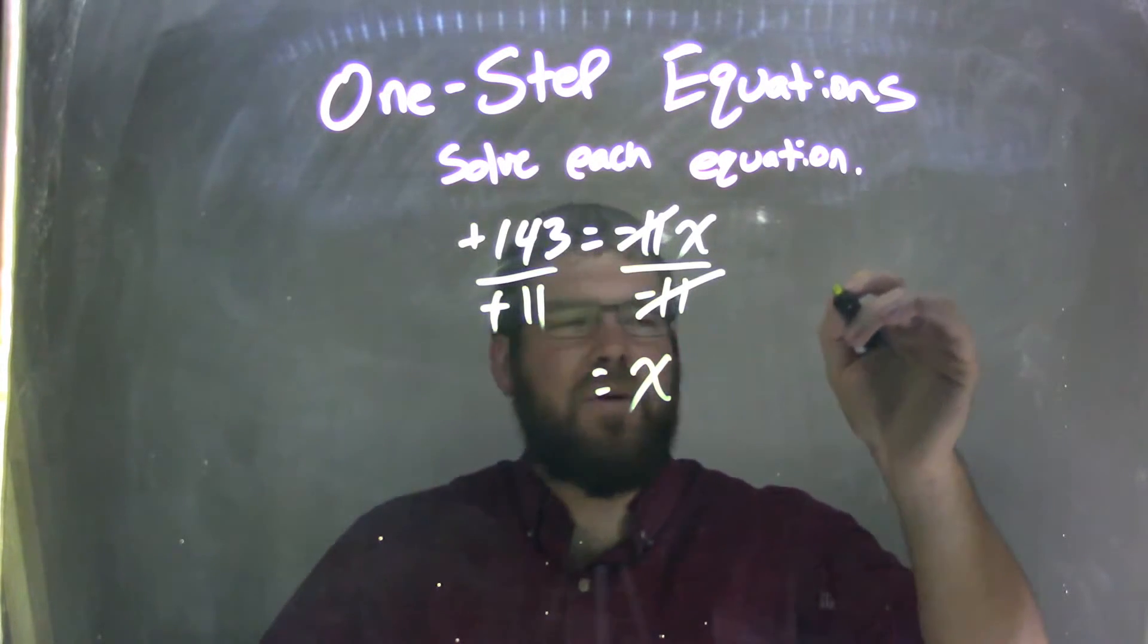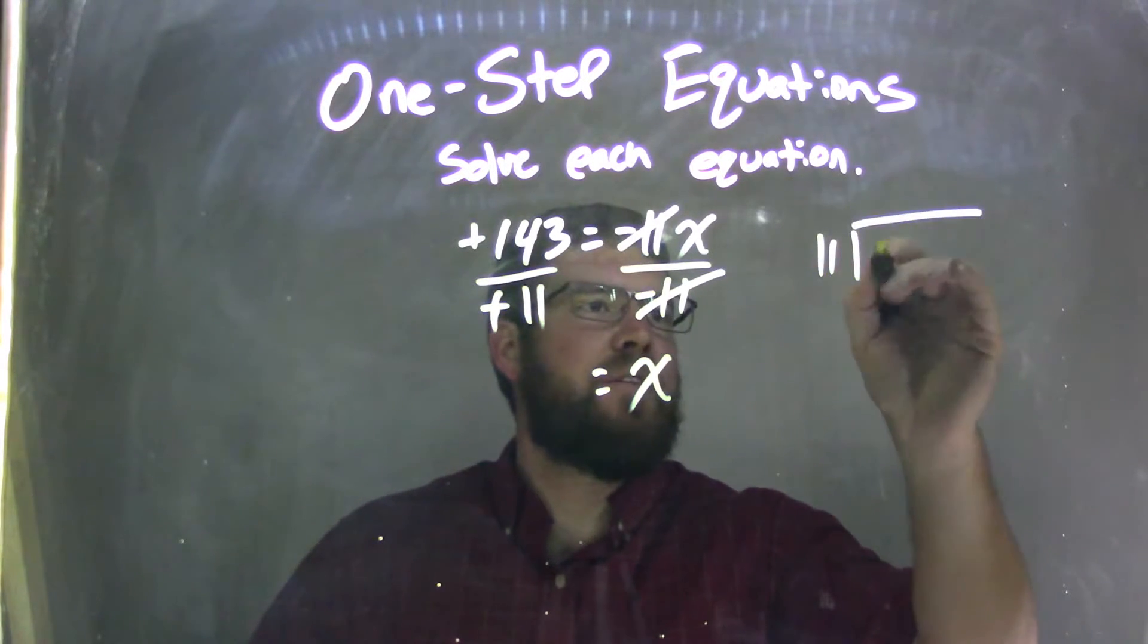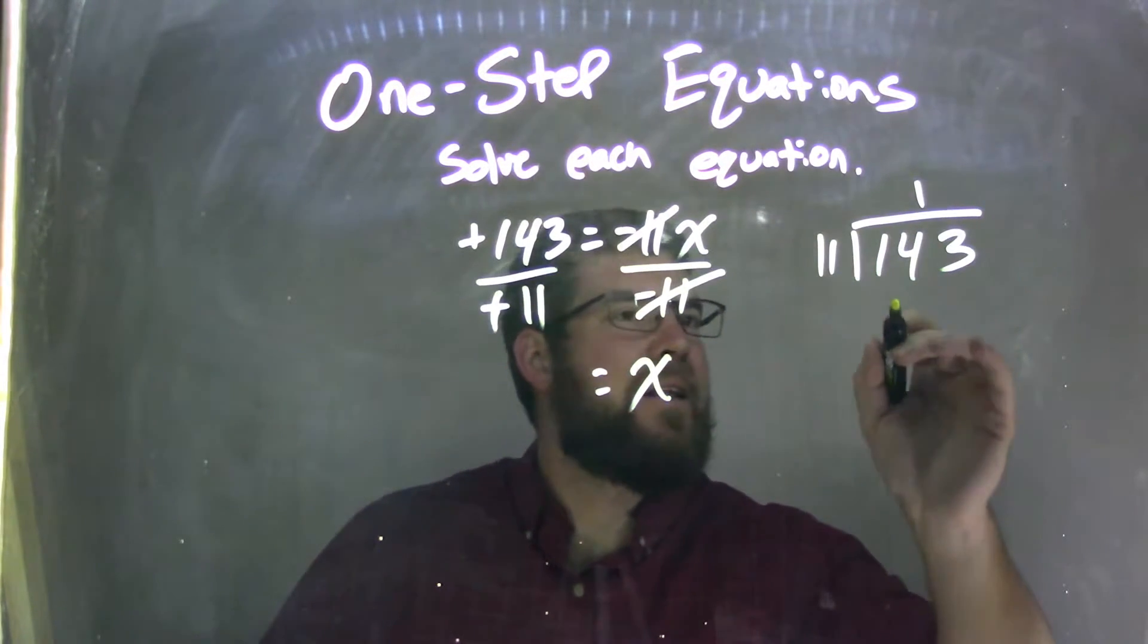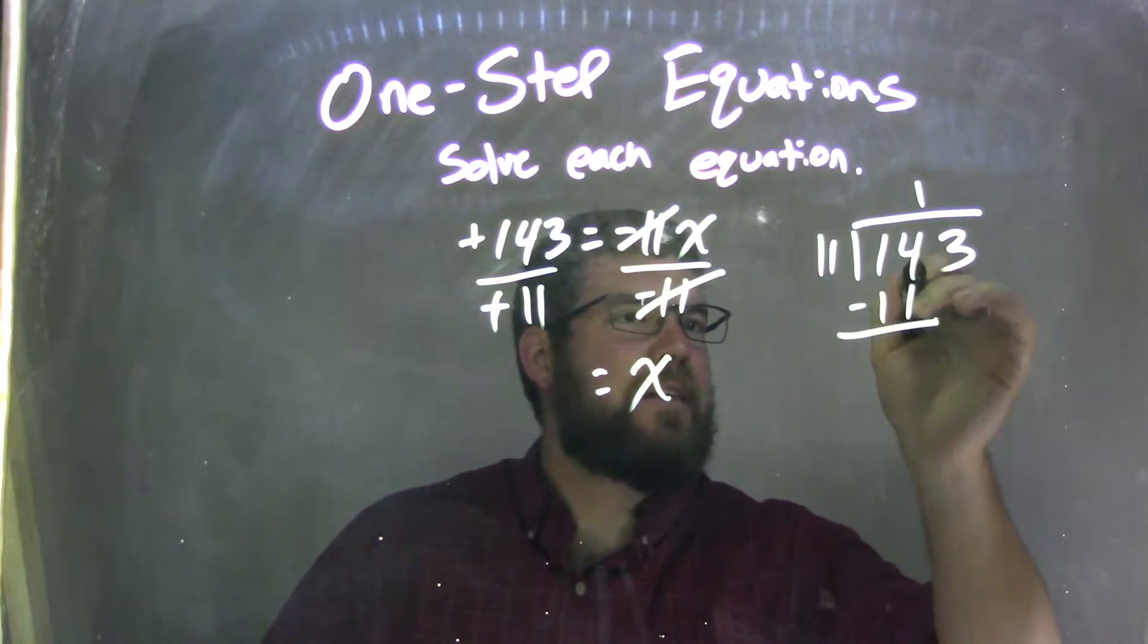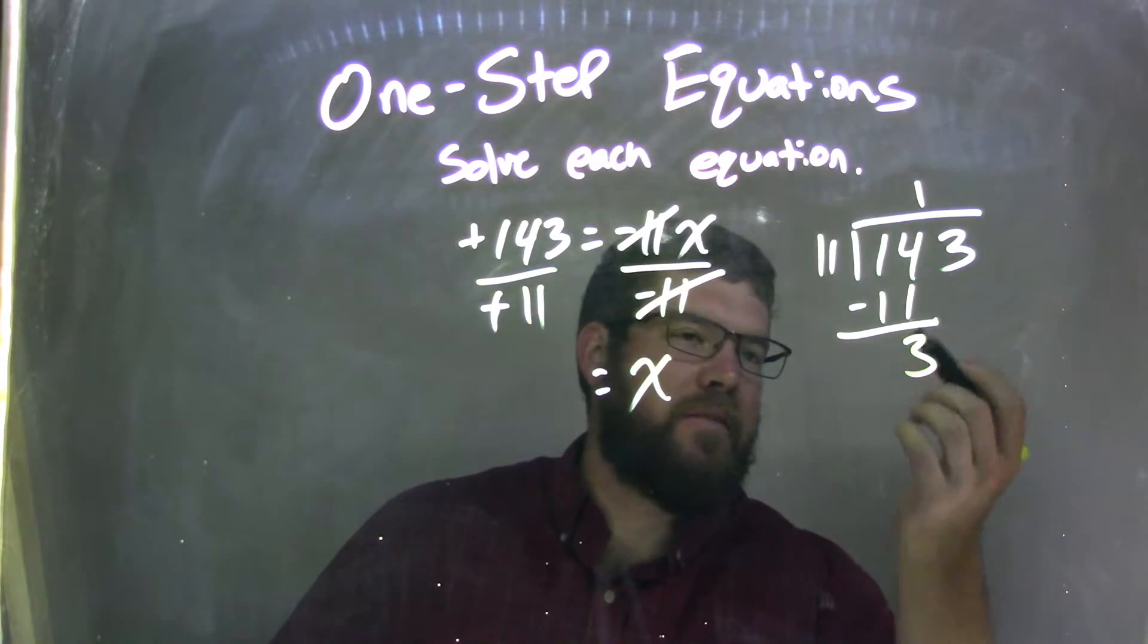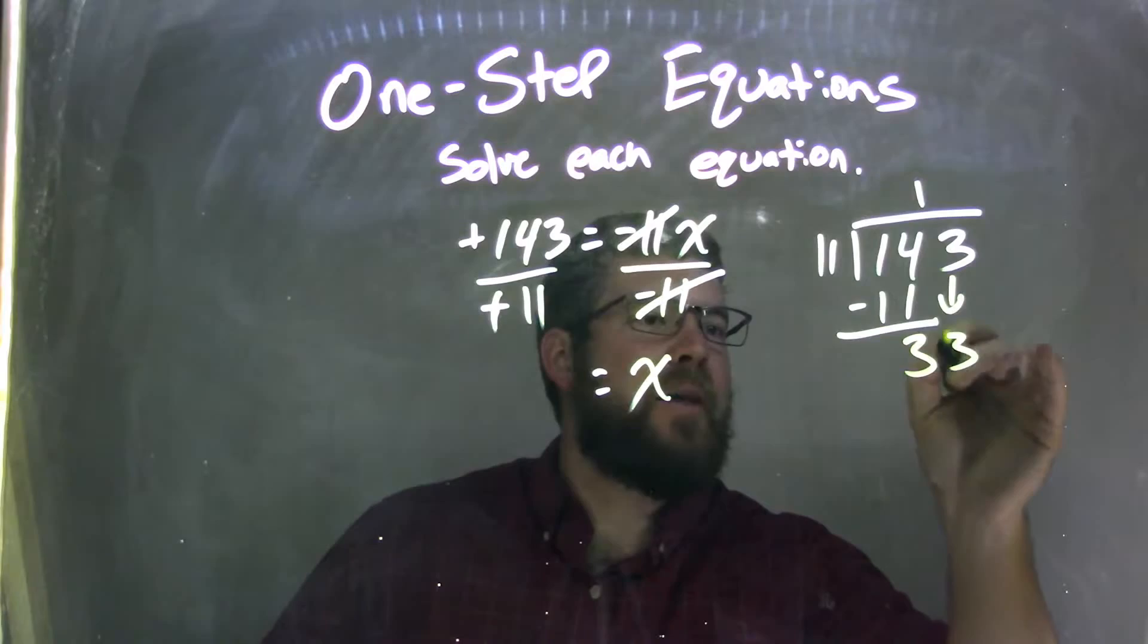What was 11 into 143? Well, let's use long division. 11 into 143. 11 to 14 one time. 1 times 11 is 11. Subtract them. 4 minus 1 is 3. 14 minus 11 is 3. Bring down the 3, and now it's pretty simple.